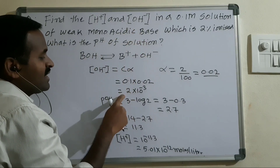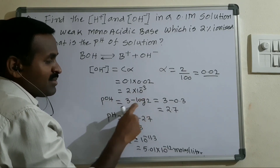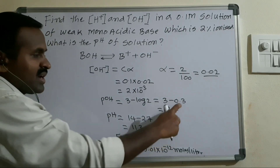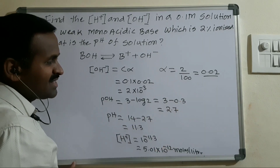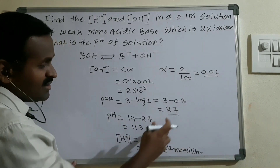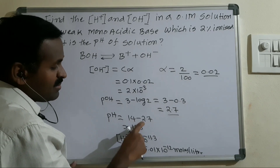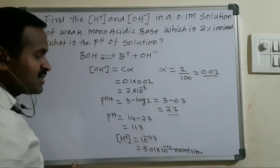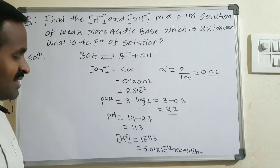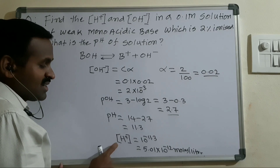We got OH⁻ ion concentration as 2 × 10⁻³. From this we find POH: POH = 3 − log 2. The log 2 value is approximately 0.3, so POH ≈ 2.7. Since they are asking for pH: pH = 14 − POH = 14 − 2.7 = 11.3.